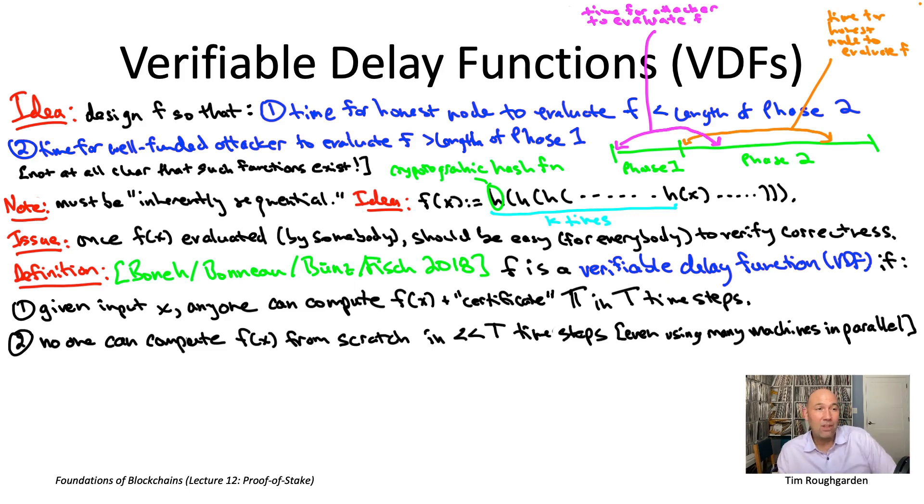Similarly, in the second property where we say no one, we really mean a well-funded attacker cannot get significant speed up over what the honest nodes can achieve. And again, thinking about a well-funded attacker, nothing's stopping them from buying thousands of machines and running them in parallel.